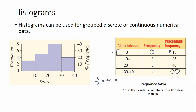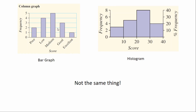A key point: a column graph and a histogram are not the same. The column graph, also called a bar graph, has little gaps between the bars, whereas in a histogram the bars are stuck together. This is because bar graphs are used for categorical data whereas histograms are used for numerical data. In numerical data the numbers flow continuously, so the bars touch.